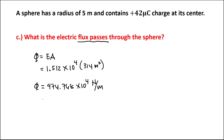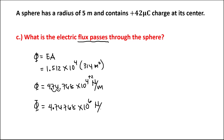To rewrite this equation in standard scientific notation, we need to move the decimal twice to the left, so we add 2 to the exponent. The electric flux is equal to 4.74768 times 10 to the power positive 6 newton per meter.